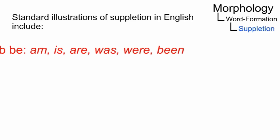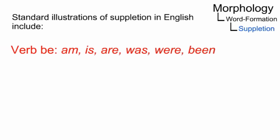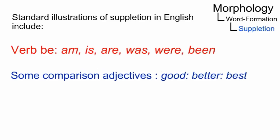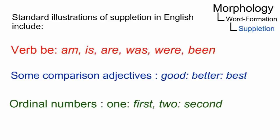Standard illustrations of suppletion in English include the forms of the verb be, the degrees of comparison of some adjectives, and the non-derived forms of ordinal numbers.